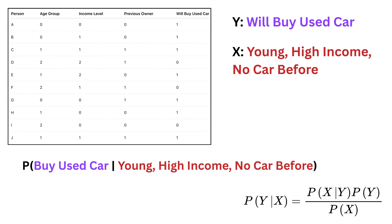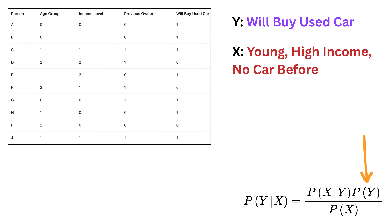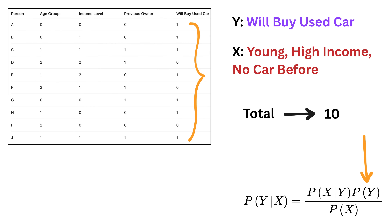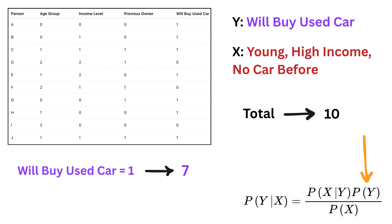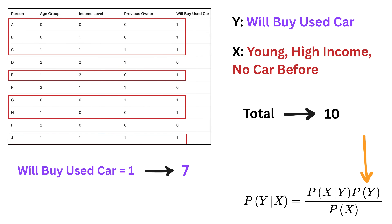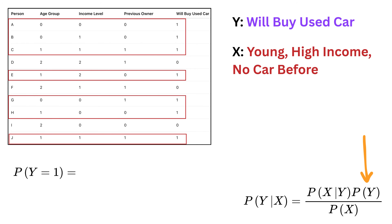First, we calculate the prior probability, P of Y. This tells us how likely it is that someone will buy a used car before considering any features. In our data set of 10 people, 7 people buy a used car (A, B, C, E, G, H, J) and 3 do not (D, F, I). So P of Y = 1 is 7 divided by 10, and P of Y = 0 is 3 divided by 10. These priors give us a starting point for our belief about whether someone will buy a used car.